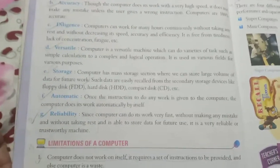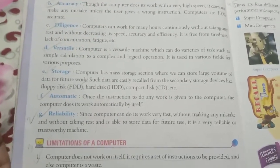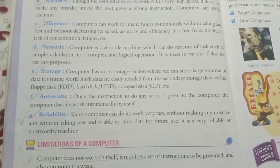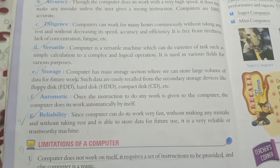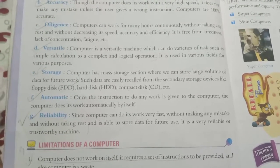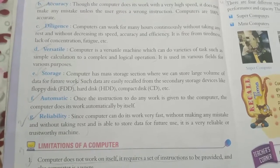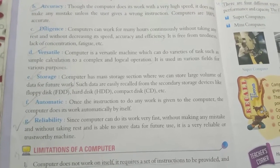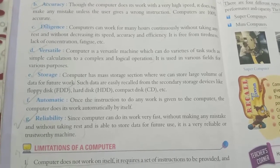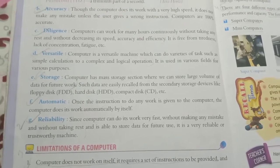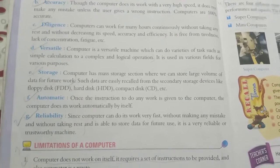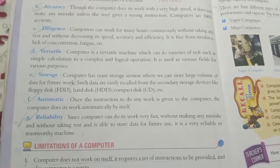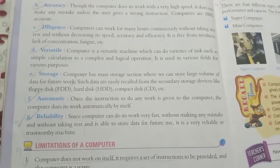Next is storage. A computer has a mass storage section where we can store a large volume of data for future work. Such data can be easily recalled from secondary storage devices like floppy disk, hard disk, and compact disk.